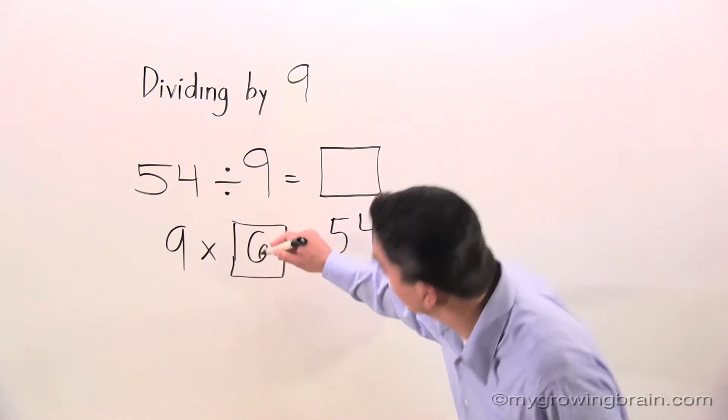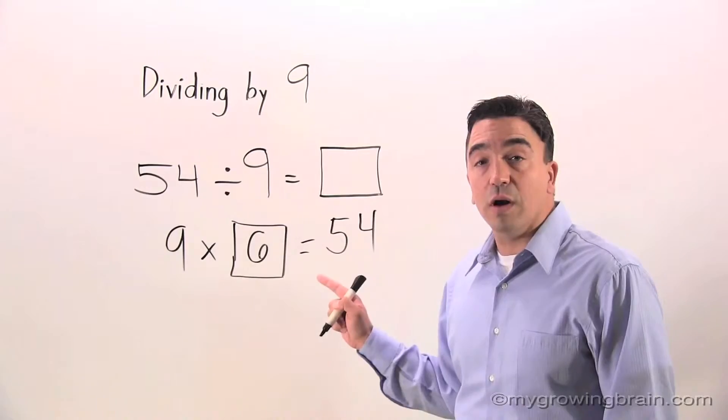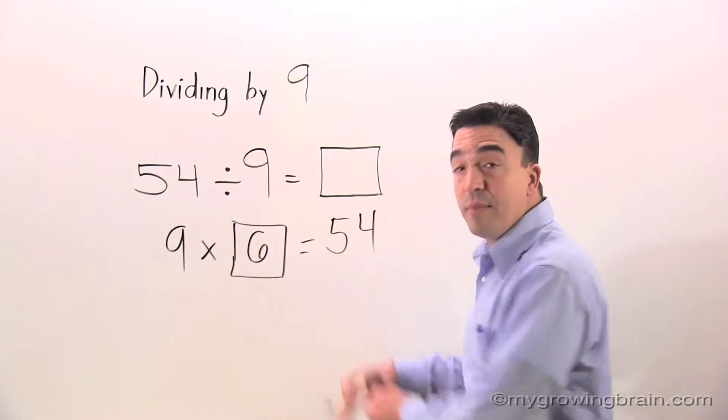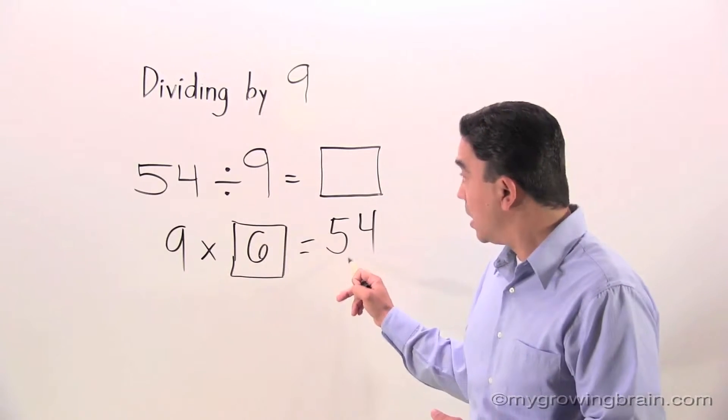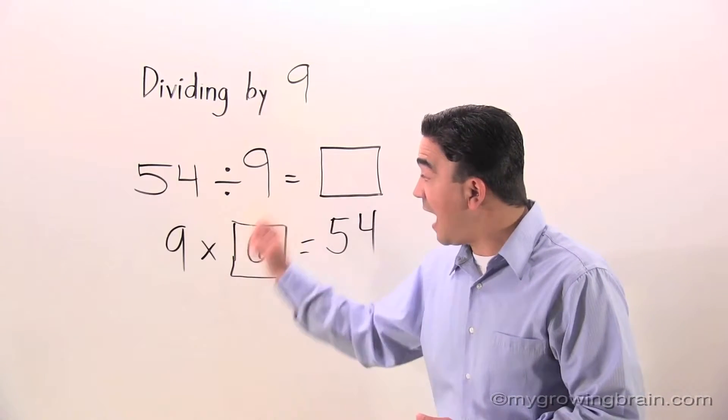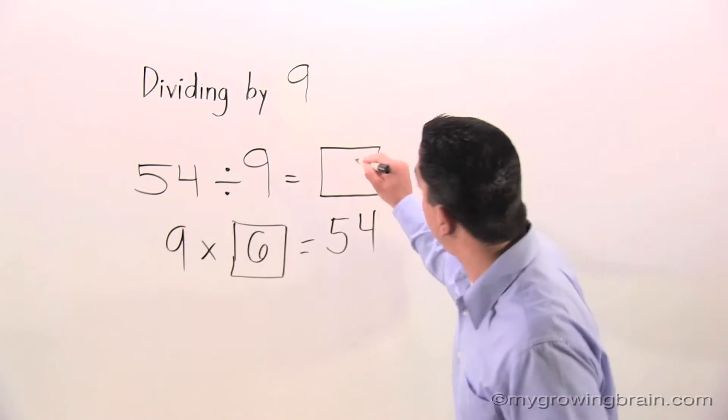9 times 6. Let me fix that 6. 9 times 6 is equal to 54. So now let's take this problem and compare it with our division problem. 54 divided by 9 is equal to 6. That's right.